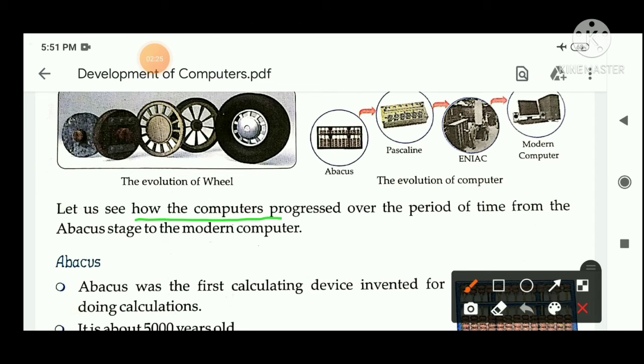The computers progressed over the period of time from the abacus stage to the modern computer. Let's see how these computers from abacus stage came to the modern computer. How did the progress go? How did the abacus come to the modern computer?